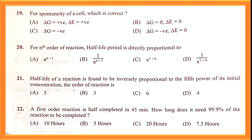For a spontaneous process, ΔG should be negative. ΔG negative means spontaneous; ΔG positive means non-spontaneous; ΔG equal to zero means equilibrium. Option C is the correct answer for question number nineteen.